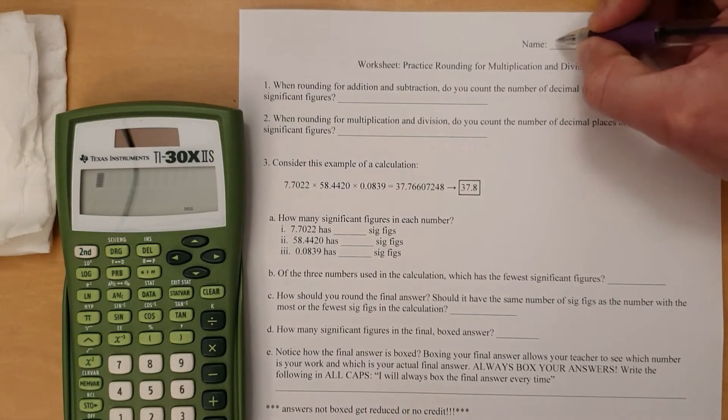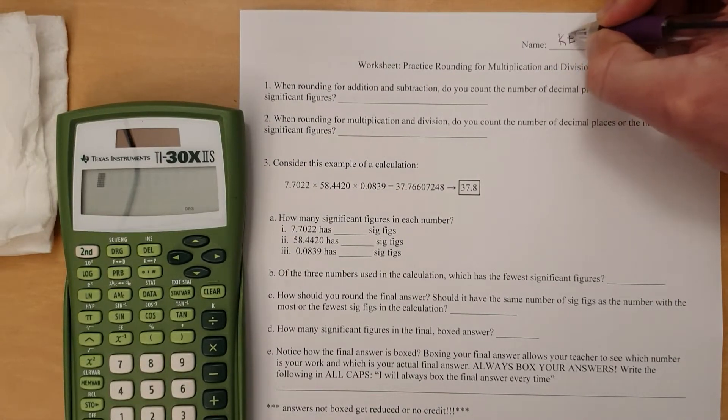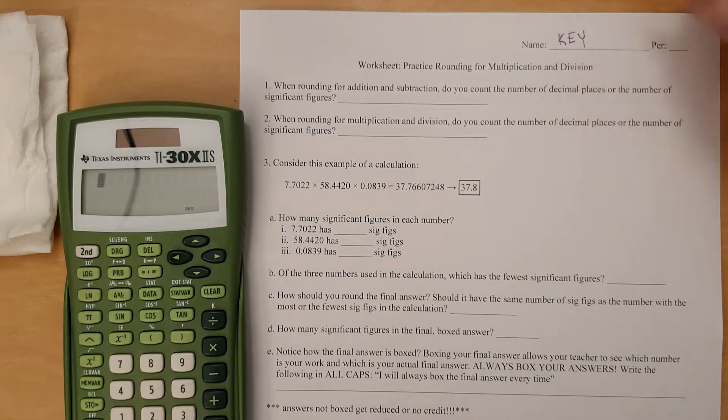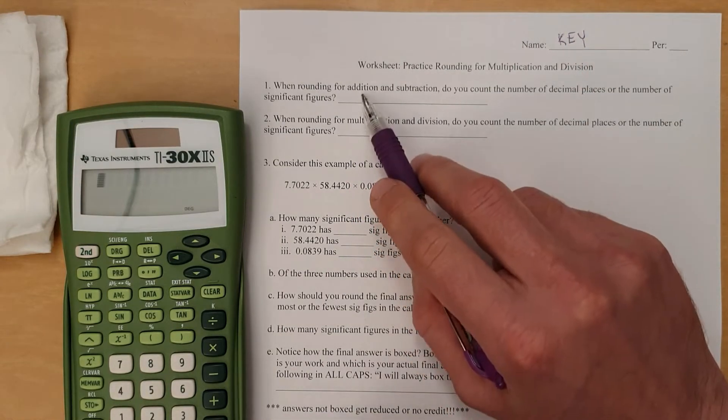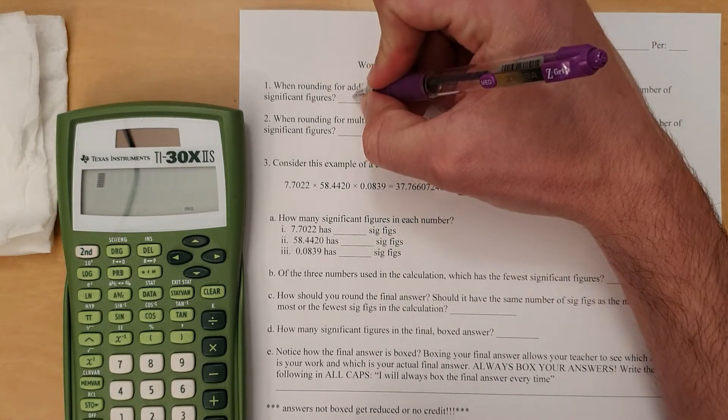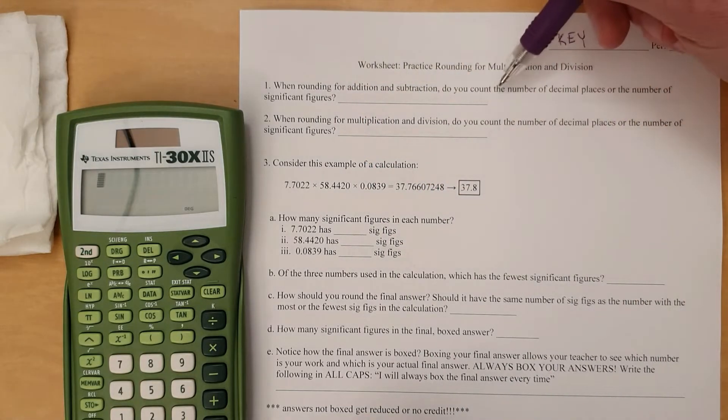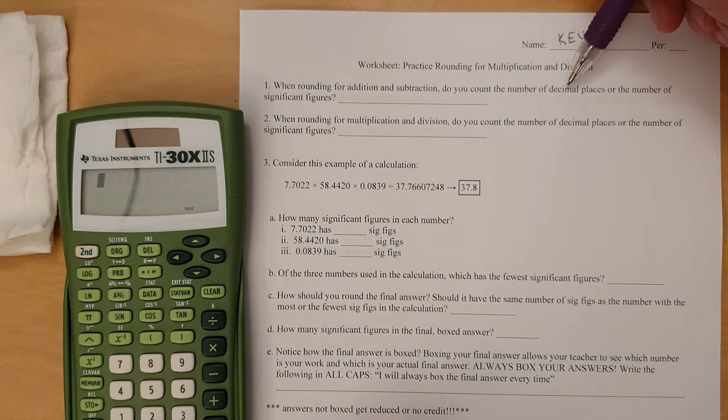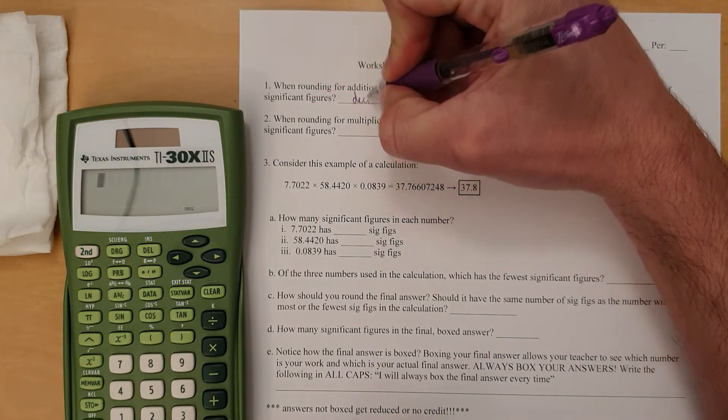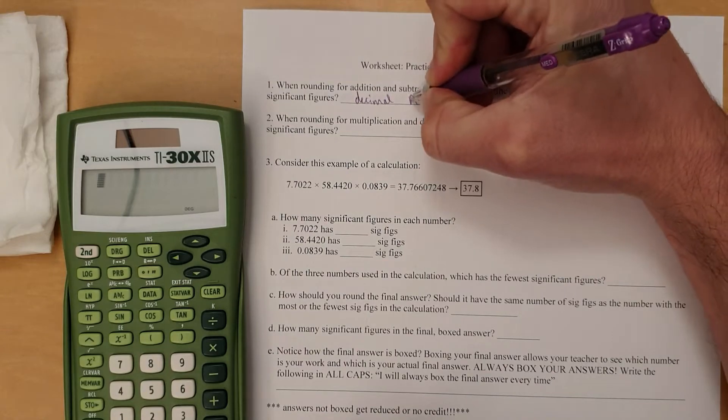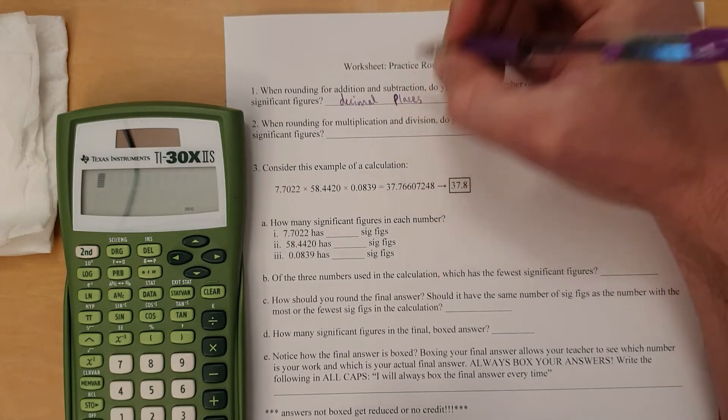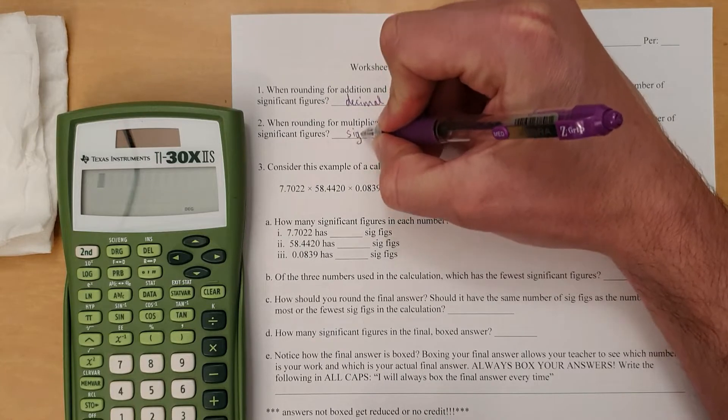All right, let's talk about rounding for multiplication and division. So this is a different rule than addition and subtraction, because with that one, what are you counting? You are counting decimal places. On the other hand, when it comes to multiplication and division, you are counting significant figures.